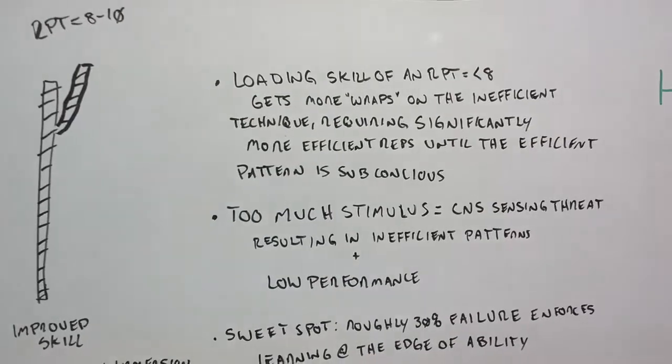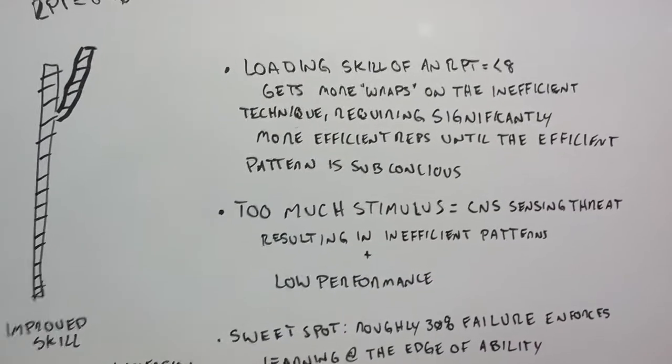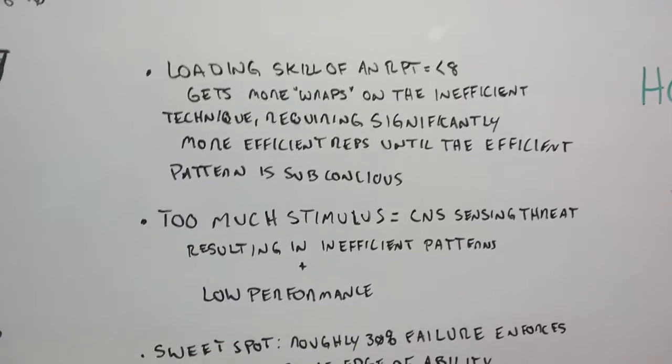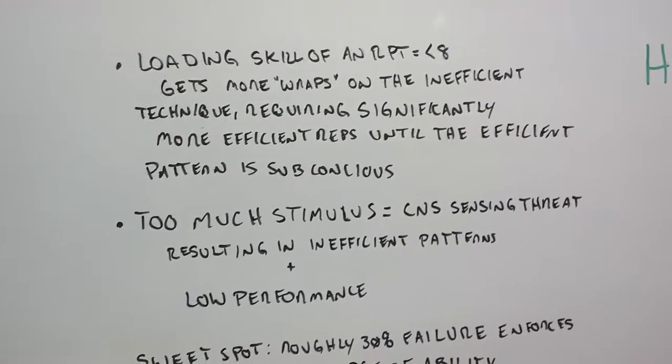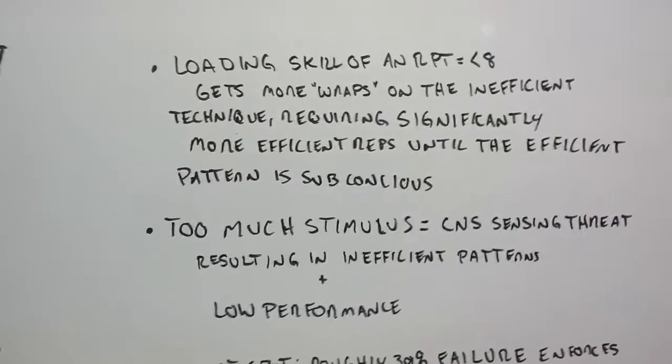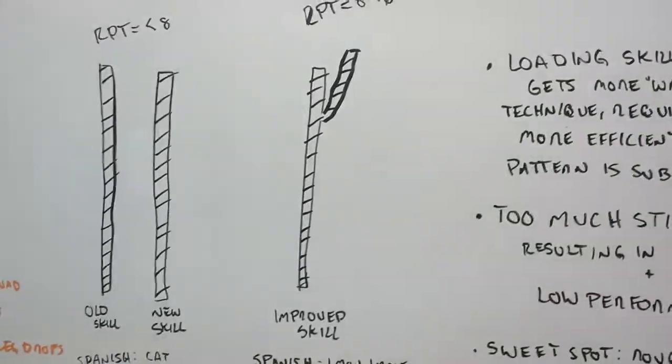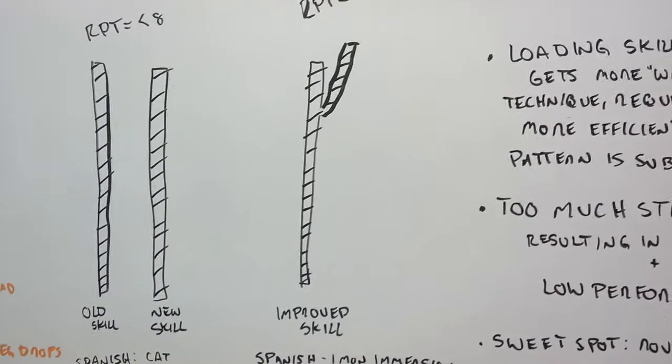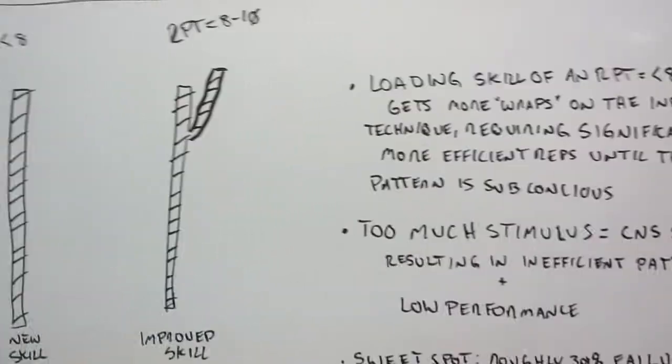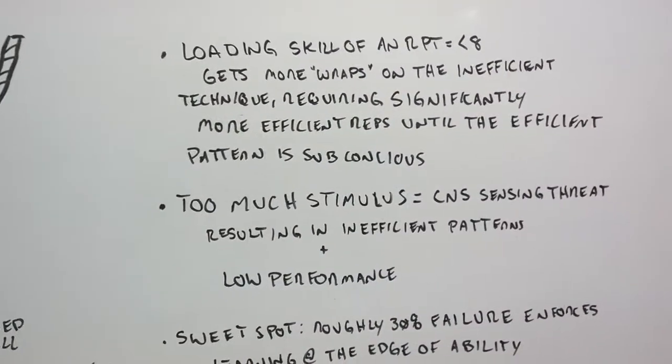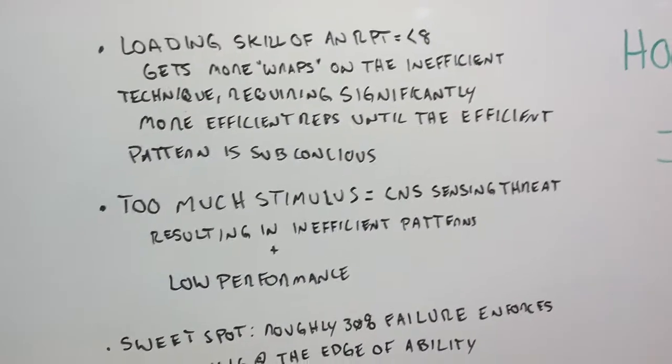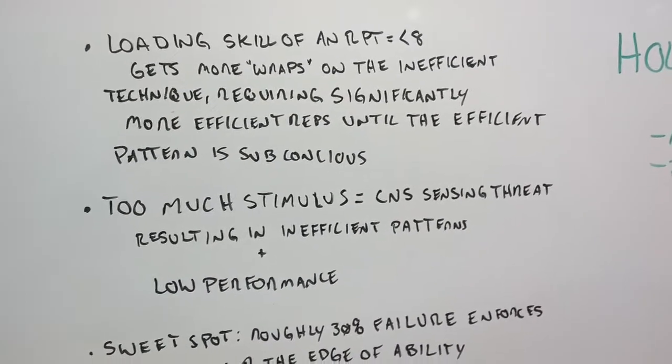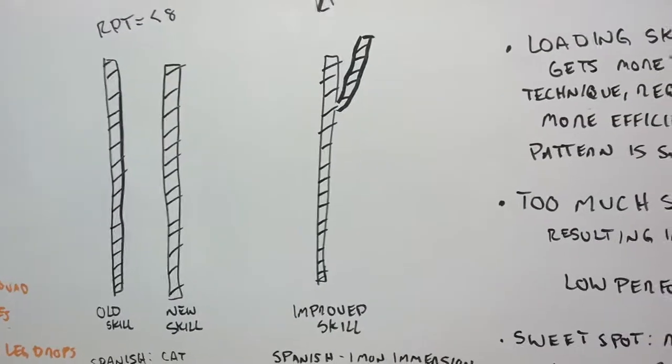Loading the skill of less than a technique of eight, what's going to happen is you're going to get more wraps on an inefficient technique requiring significantly more efficient reps until the efficient pattern is now subconscious. So basically if you get a lot of repetitions with a really crappy skill because you just didn't care for whatever reason, you're now going to have to do thousands and thousands of perfect repetitions to be able to make that pattern subconscious. So when you're fatigued, when you're not thinking about it, the pattern that's going to come out is whichever one has the most wraps of myelin.